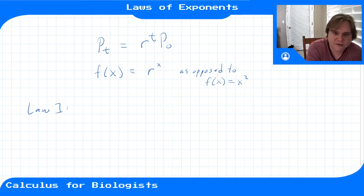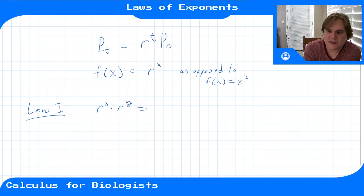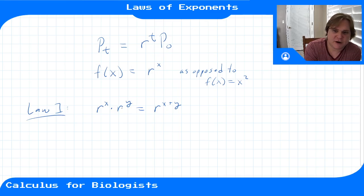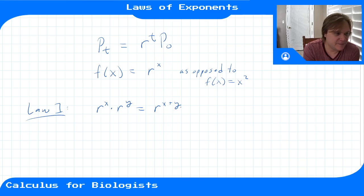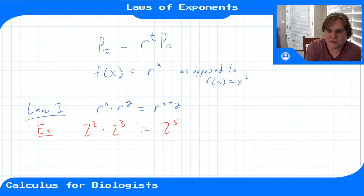The first law of exponents is that if you multiply two things with the same base, then you add their exponents. So if I have r^x times r^y, that's the same thing as r^(x+y). This represents r multiplied by itself x times, and r multiplied by itself y times, so multiplying them together gives r multiplied by itself x+y times. For example, 2² times 2³ is the same thing as 2⁵, because we just add those exponents together when we multiply.